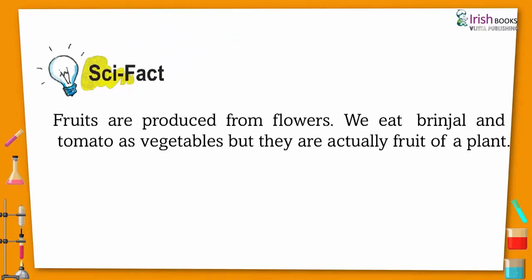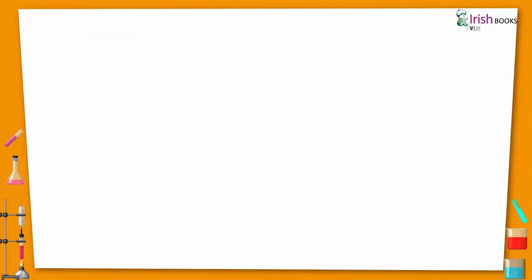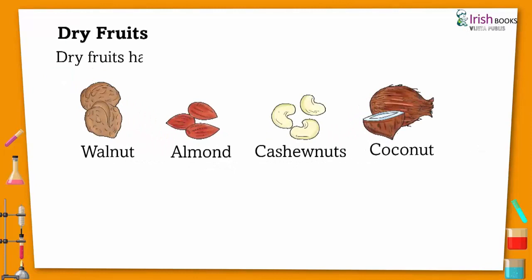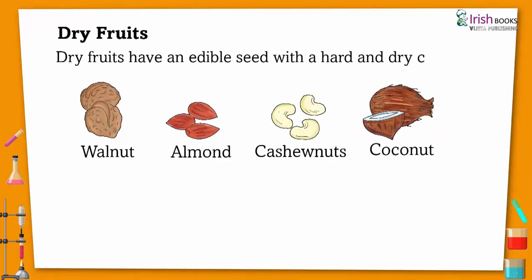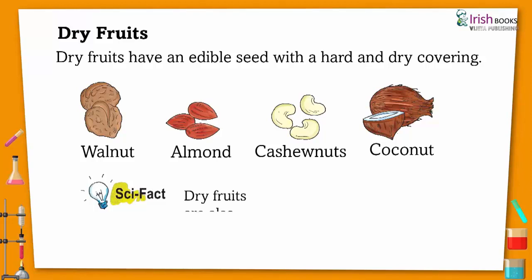Scientific fact: fruits are produced from flowers. We eat brinjal and tomato as vegetables, but they are actually the fruit of a plant. Dry fruits have an edible seed with a hard and dry covering, like walnut, almond, cashew nuts, and coconut. Scientific fact: dry fruits are also called nuts.